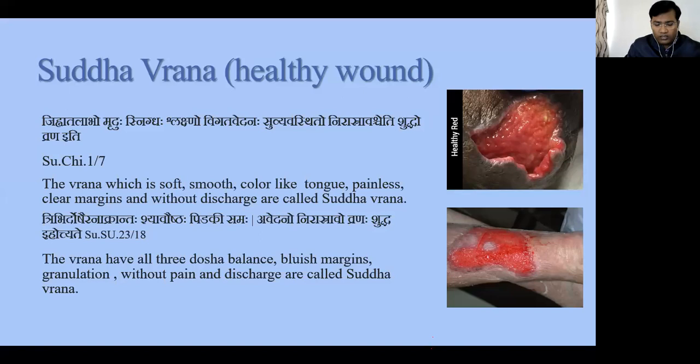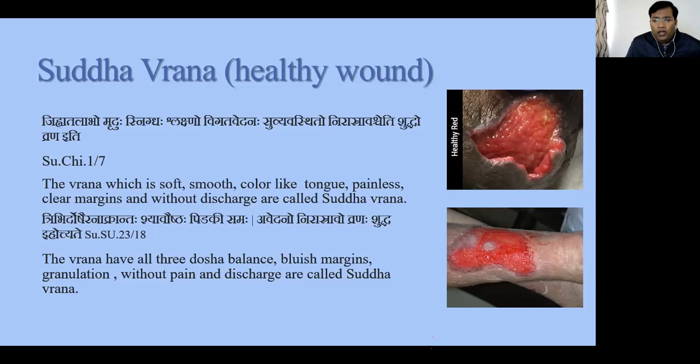This definition is from the Sutrashtan third chapter, and the first one from the Chikitsa-sthana first chapter. These two shlokas are very important and everybody should memorize them. In the second sloka: Tribir Doshair Naakranta means when all three doshas — Vata, Pitta, Kapha — are in Samyavastha (equilibrium), the margin of the wound is bluish (Syaav color), and Pidikasama means there are some granulations.